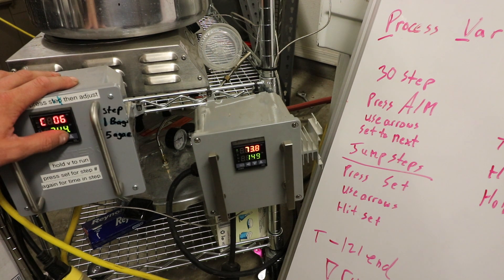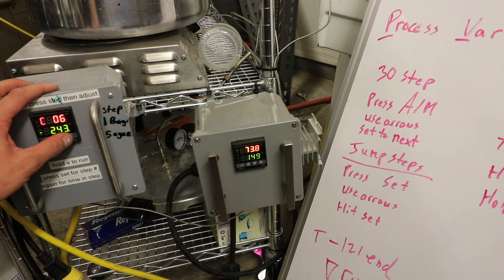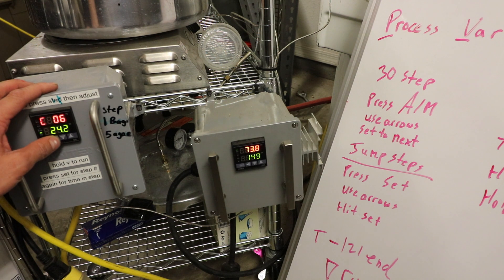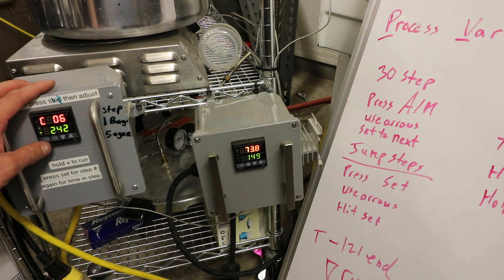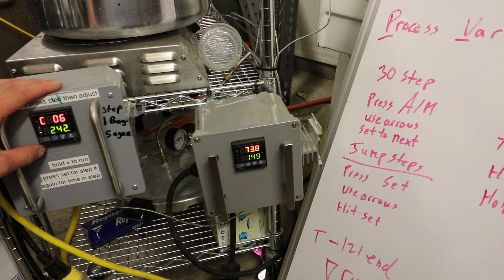Right now it's telling you that step six is 244 Fahrenheit. If I wanted to adjust that, I can go up and down, and I can also move the decimal point over and move it around like that. If I wanted to go to the next, I would just hit set.